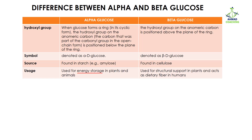Alpha glucose is used for energy storage in plants and animals. Since glucose is the instant source of energy, they store it in their body so it can be used when glucose levels are low. In the case of beta glucose, it is used for structural support in plants. All the wood, tree leaves — they are made up of cellulose molecules which provide a rigid structure, allowing plants to be tall and withstand winds. In animals, beta glucose acts as dietary fiber; for example, spinach and green vegetables contain beta glucose, and while humans cannot digest it, it helps in digestion by aiding peristalsis movement in the digestive system.